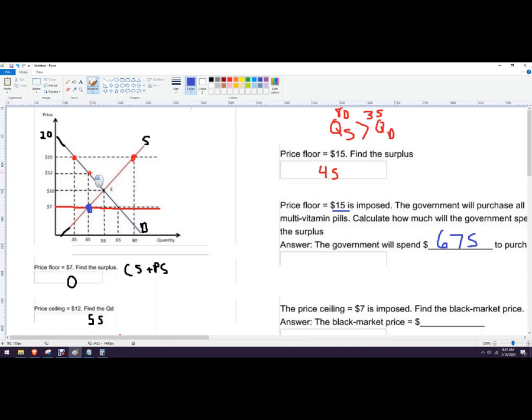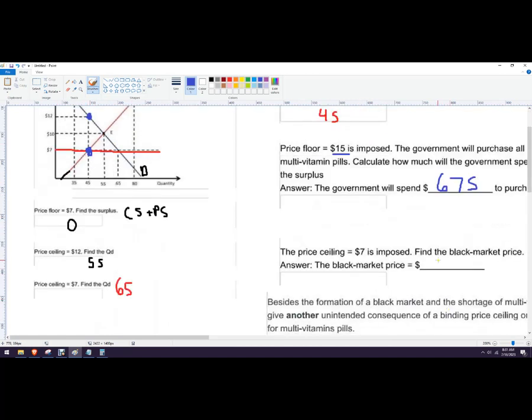for 45 units, there's some people willing to pay $12 for those units. So the black market price is going to be wherever that level of demand is for those units. It's $12 black market price.